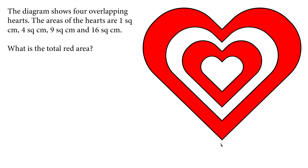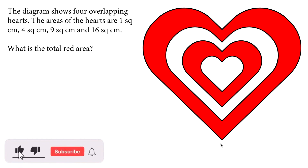Hello everyone. In this video, we will solve this geometry question. We have four heart shapes and they are put on top of each other. The diagram shows four overlapping hearts. The areas of hearts are 1 square centimeter, 4 square centimeter, 9 square centimeter, and 16 square centimeter.